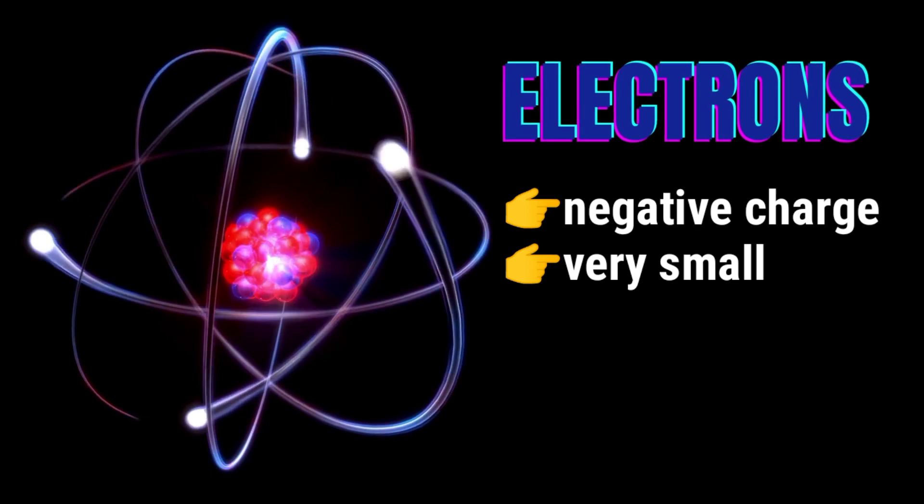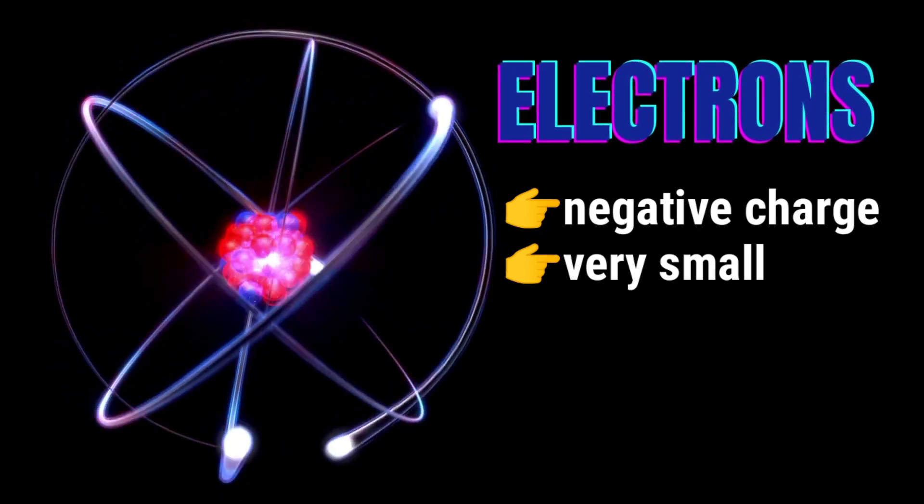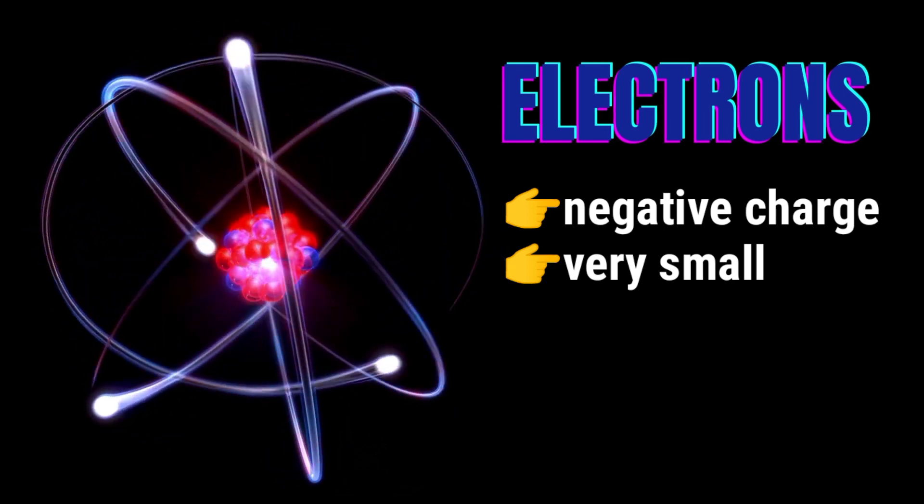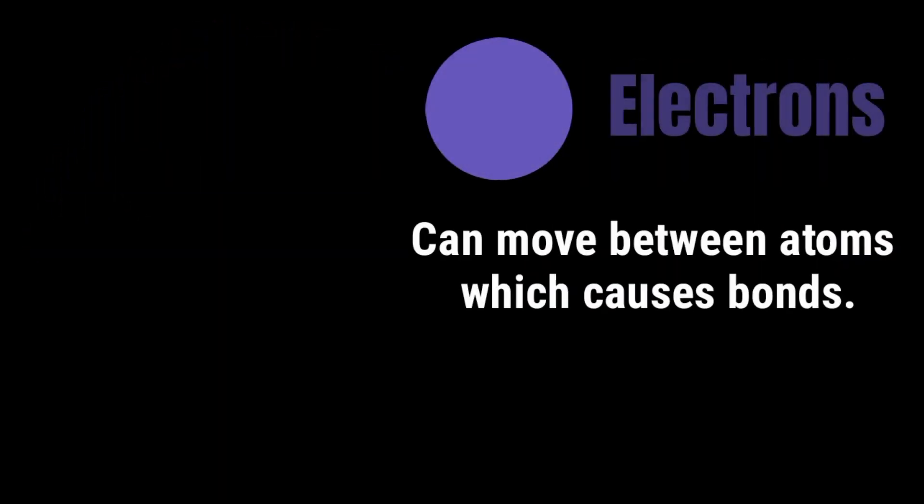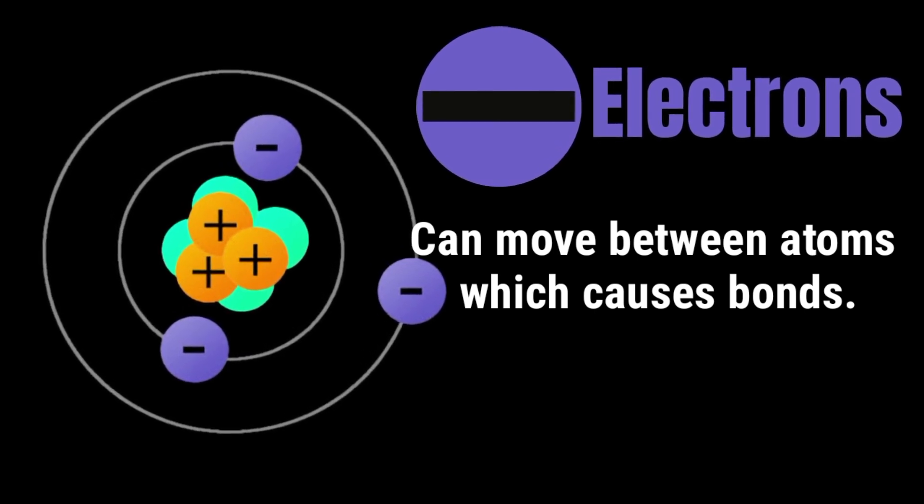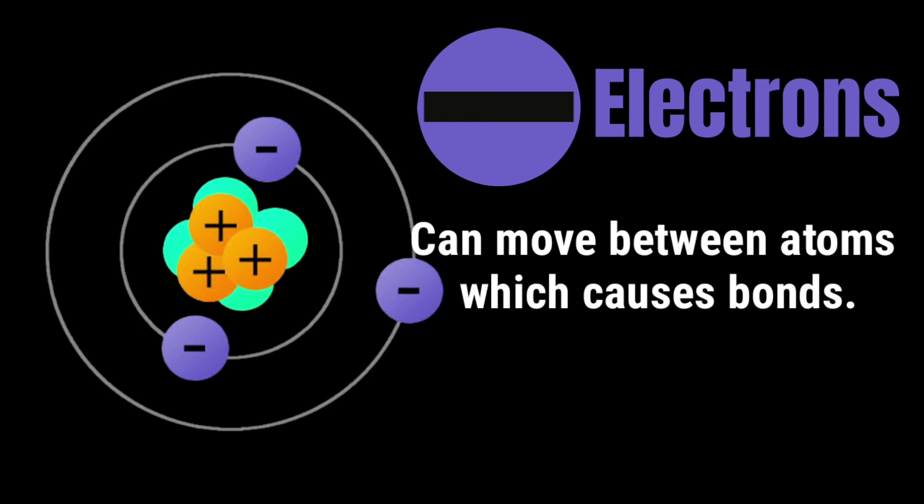Electrons are very small, only about 1 over 2,000 the mass of proton or neutron. Electrons can move between atoms which causes bonds. This is how new compounds are formed.